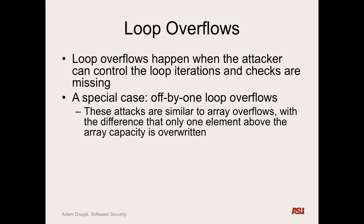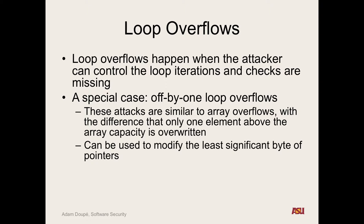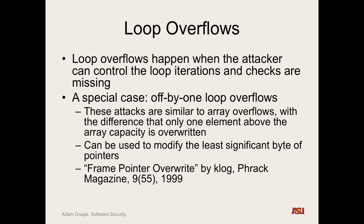If there's a buffer on the stack and it's the only variable, what's right above that buffer in local variables? The saved base pointer. So an off-by-one error will allow us to go one above into the saved base pointer. Depending on the size of the data, we can modify either the least significant byte — which is usually the case with character buffers — or the whole thing. There's a really good paper on frame pointer overwrites if you want to go deeper.